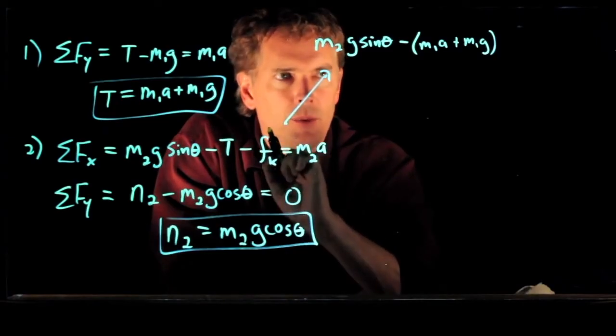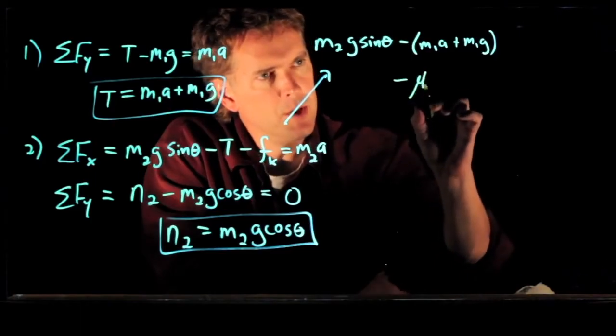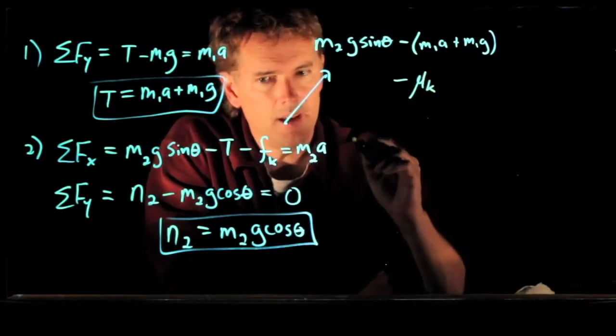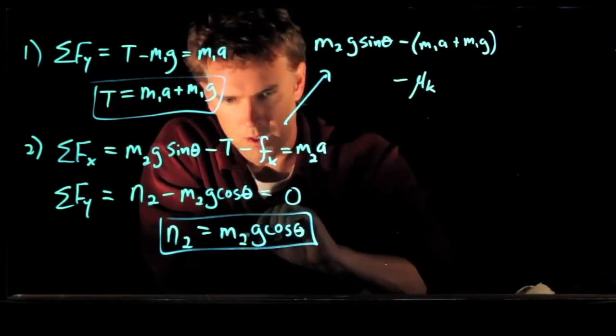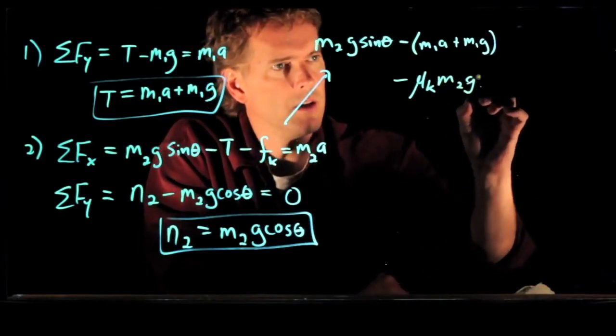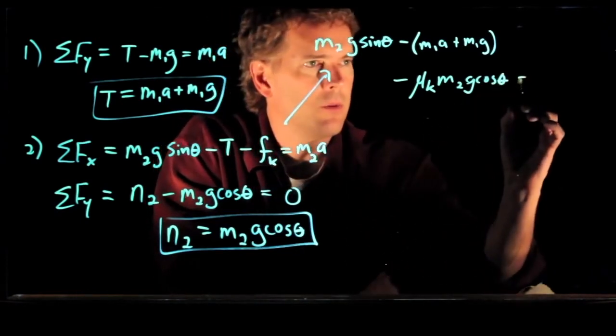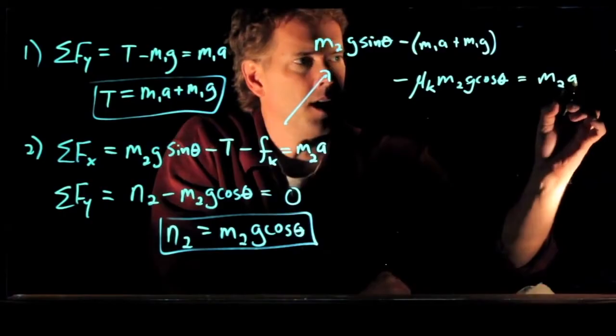And now we have to subtract Fk. But we know exactly what Fk is. Fk is equal to mu k times N, the normal force, which is M2g cosine theta. And all that is equal to M2a.